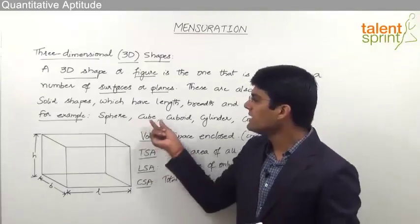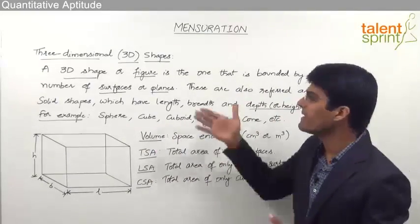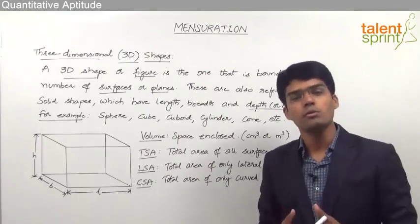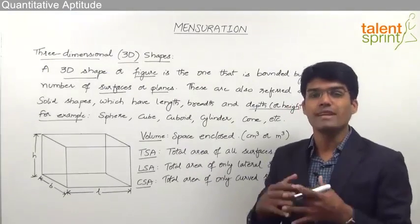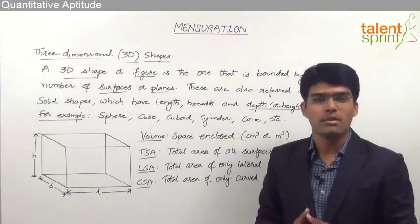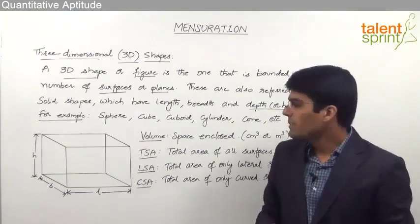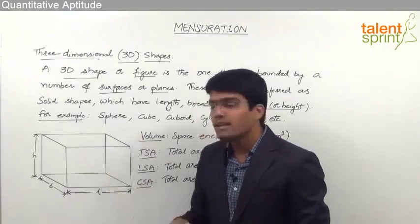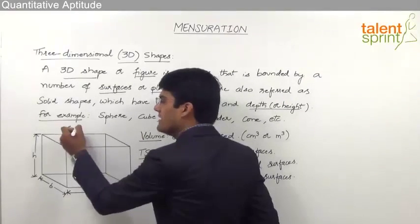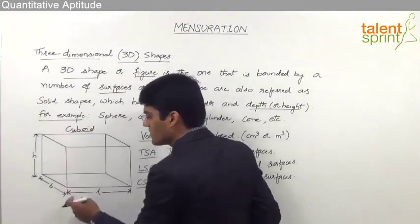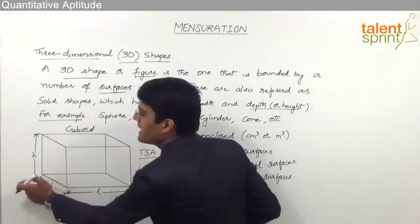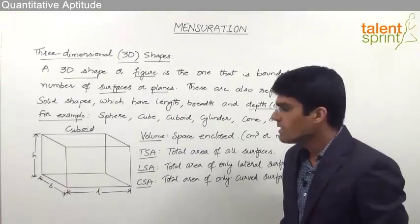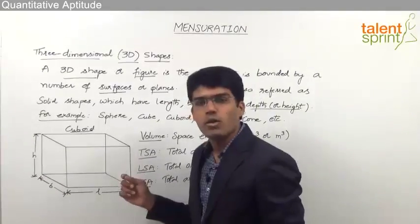It is difficult to draw all these 3D figures on a 2D surface like a board or a paper. Why? Because a board or a paper has got only two dimensions, and hence we cannot put a three-dimensional figure on this paper or board. But this is an angular view of a 3D shape — this is a cuboid which has got length, breadth and height.